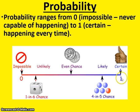Probability ranges from 0, which means impossible or never capable of happening, to 1, which means certain or happening every single time. So for example, if I were rolling a number cube and I said what's the chances of you getting a 10, you would say 0, it's impossible. If I said what's the probability that you get a number 1, 2, 3, 4, 5, or 6, you would say that's certain because those are all the numbers on the dice. Everything in between ranges from impossible to certain such as unlikely, even chance, or likely.